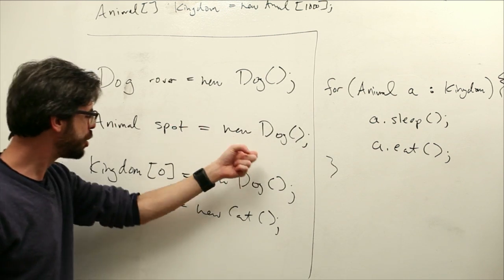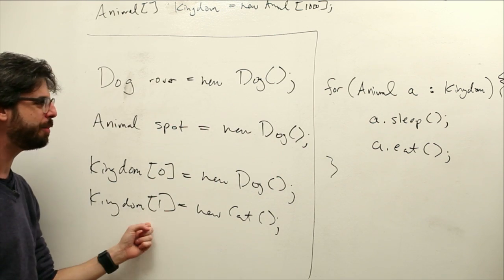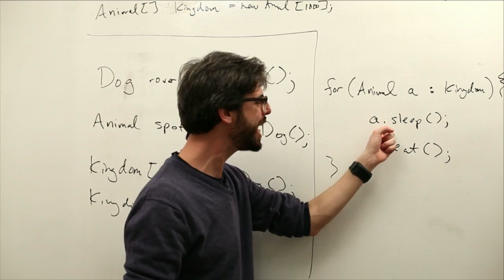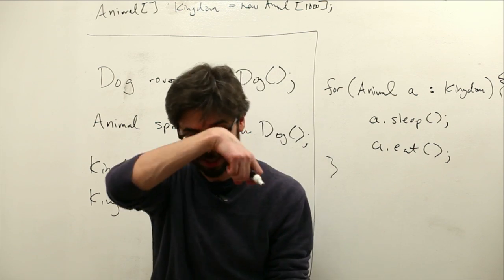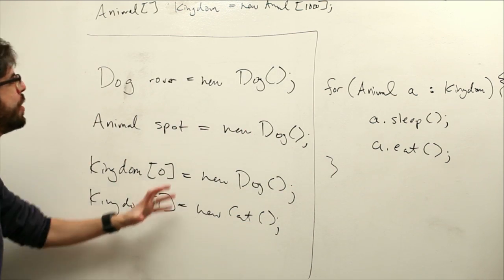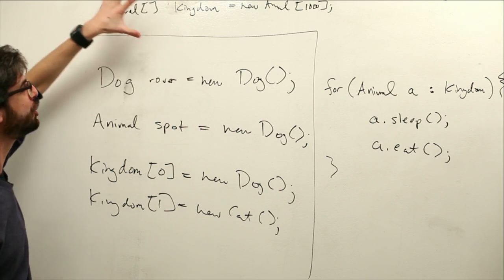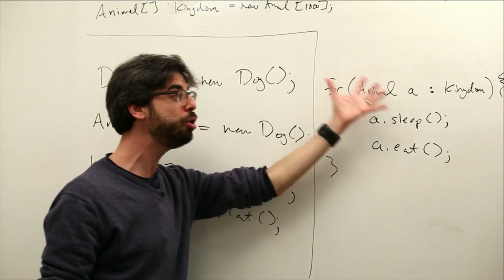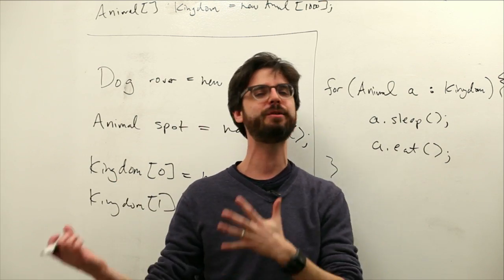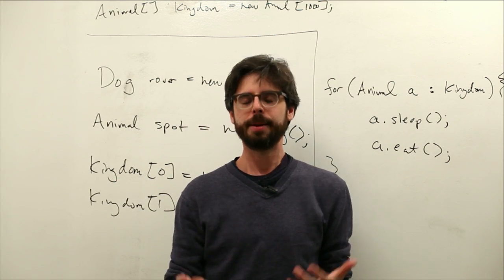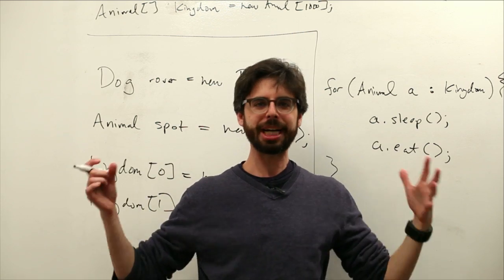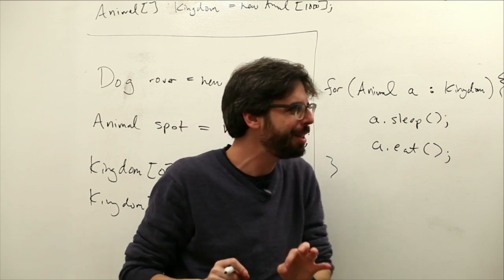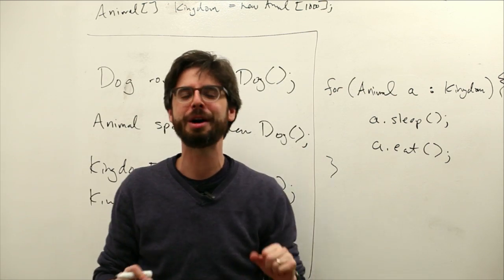We made a dog and put it in the first spot, we made a cat and put it in the first spot. They're both animals, but a dog is a dog. When it gets to sleep, it's going to sleep like a dog. When it gets to eat, it's going to eat like a dog. This is very powerful. We can have an array of generic animals, put specific kinds of animals in that array, loop through all of them, and we don't have to keep track of which one is which. Java, processing, the computer keeps track of all of that for us.